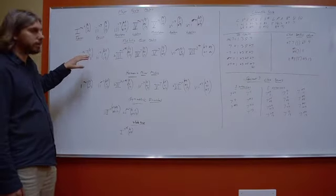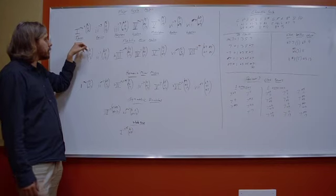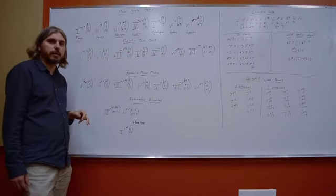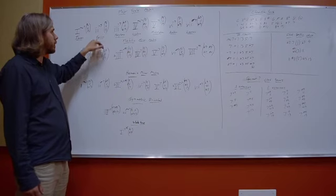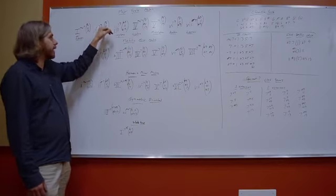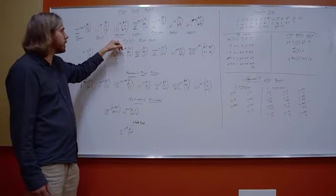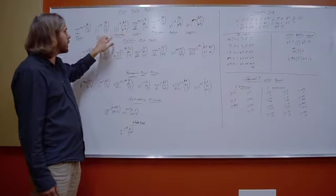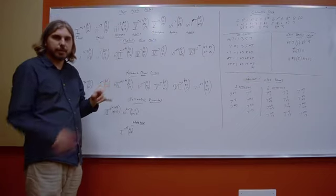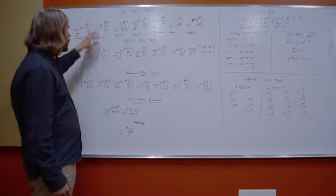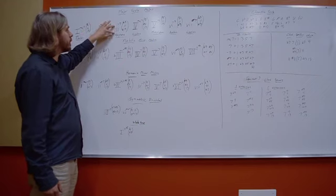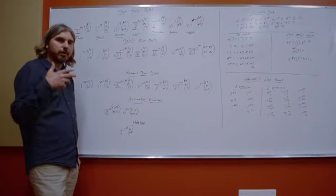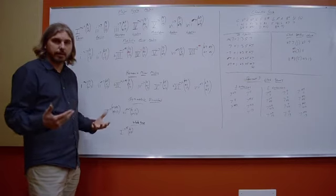Let's start off with what the individual chord sounds are. With the one chord and the major scale modes, this would be the Ionian mode — a major 7 sound with a 9, 11, and 13. The Dorian mode, or the two chord, is a minor 7 sound with a natural 9, 11, and natural 13. The Phrygian mode is also a minor 7 sound, but with flat 9, 11, and flat 13. These two sounds are kind of polar opposites. In Dorian you have a natural 9 and natural 13; in Phrygian you get a flat 9 and flat 13. Those are the key notes that make each chord sound characteristic.